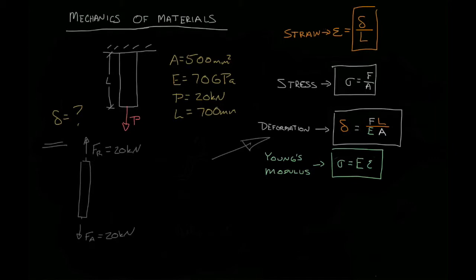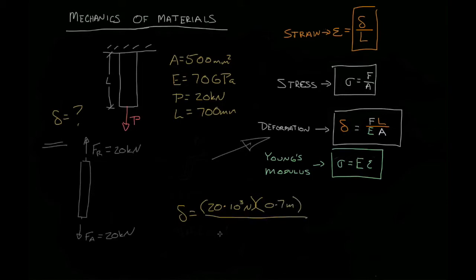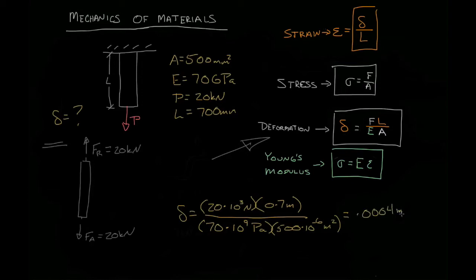We just have a slightly different equation. Let's be careful as we plug in the numbers to make sure we get our units right. 20 kilonewtons is 20 times 10 to the third newtons. The length is 700 millimeters, which is 0.7 meters. We divide by the Young's modulus, 70 gigapascals, which is 70 times 10 to the ninth pascals. The area being 500 square millimeters is 500 times 10 to the negative 6 meters squared. We find a deformation of 0.004 meters, equals 0.4 millimeters.